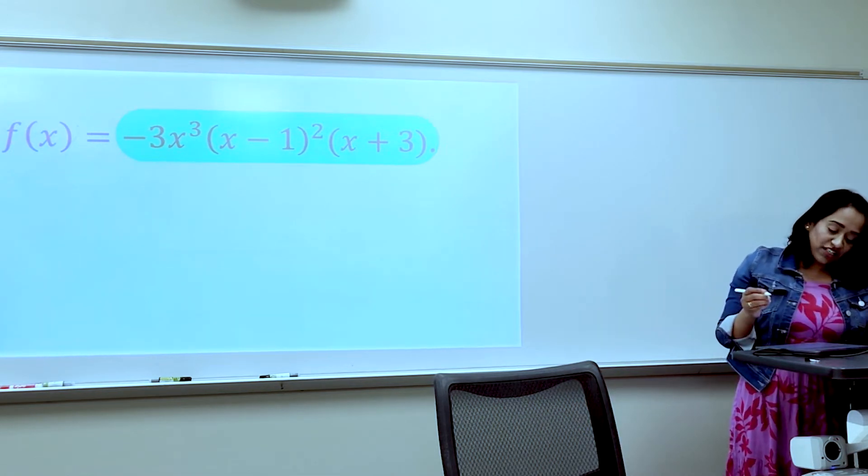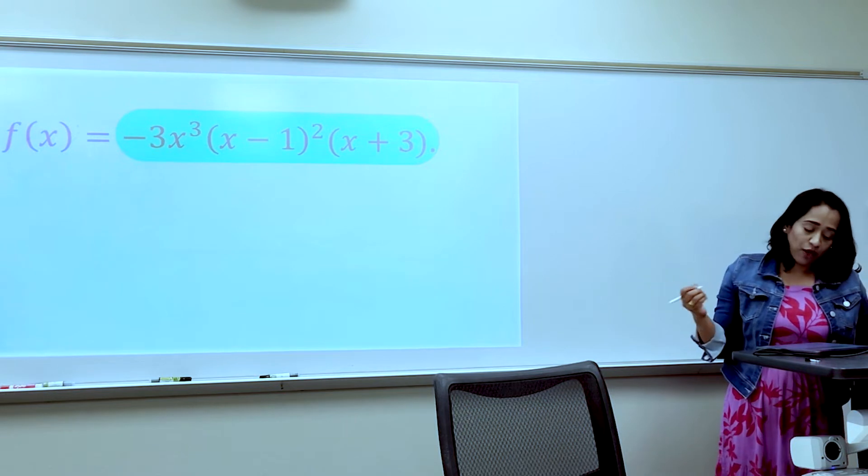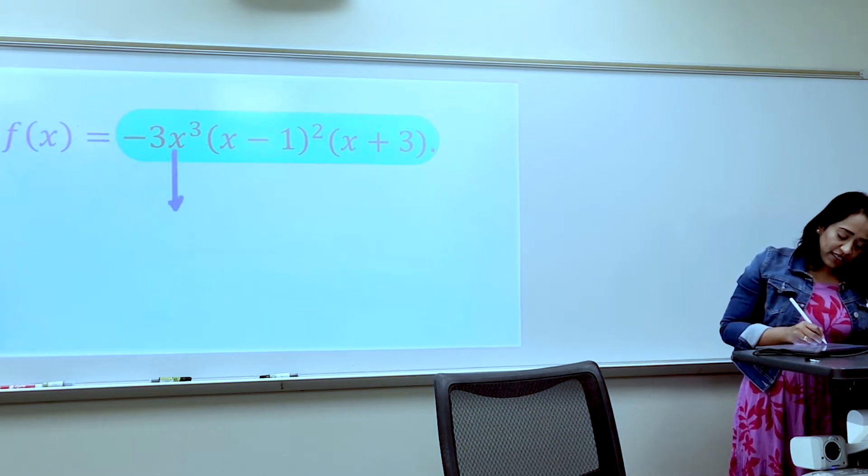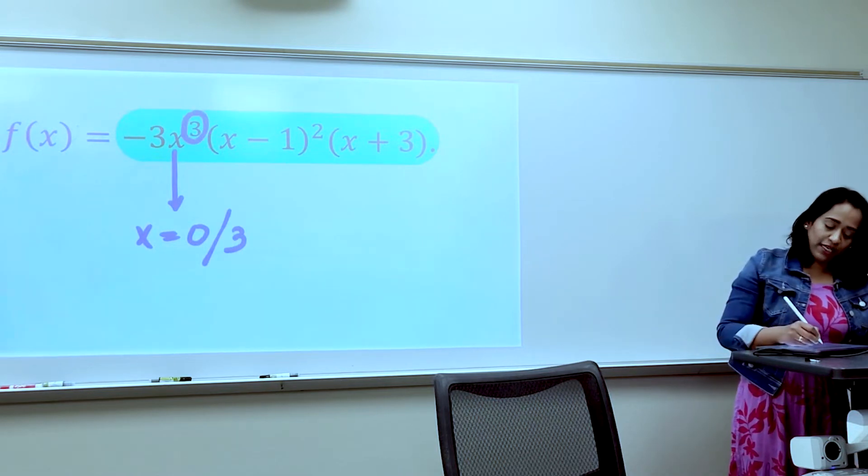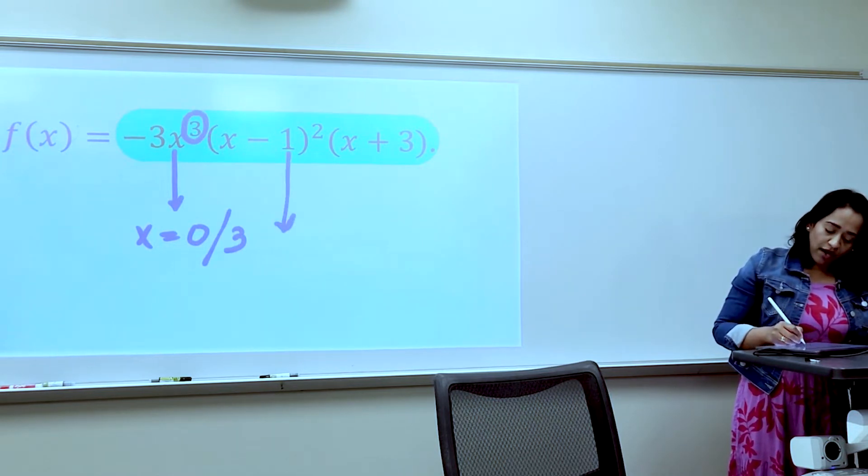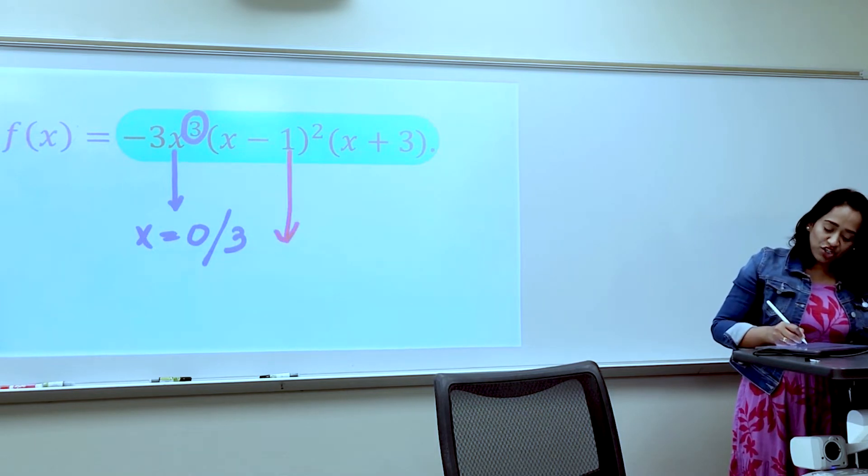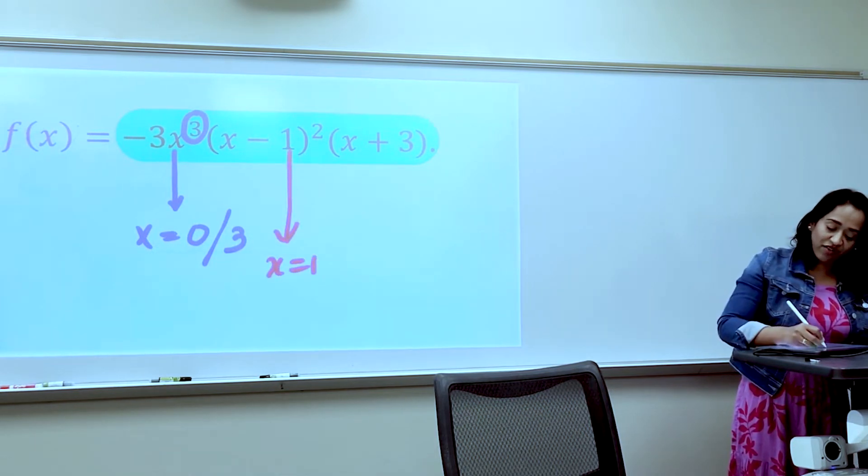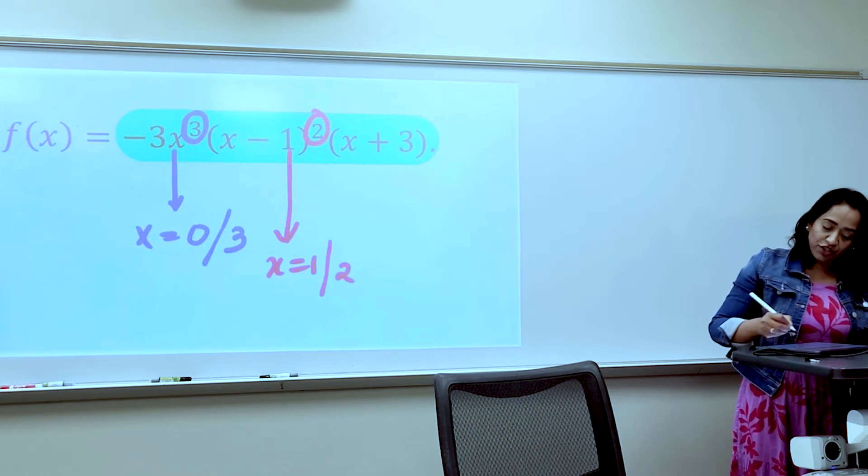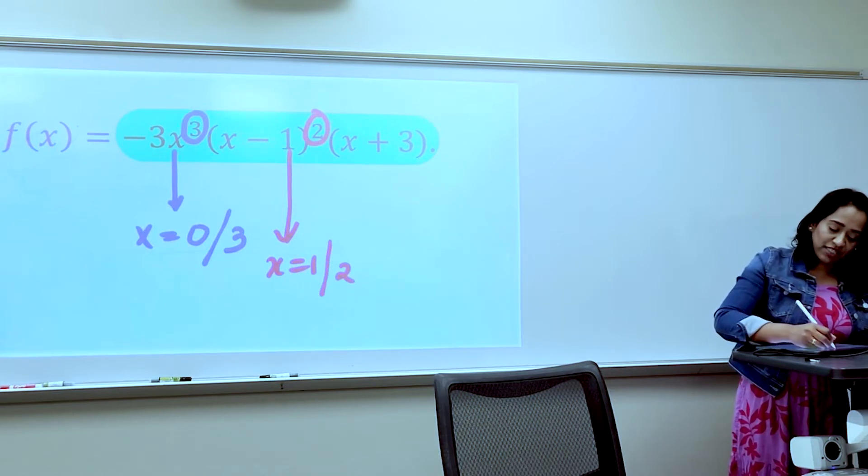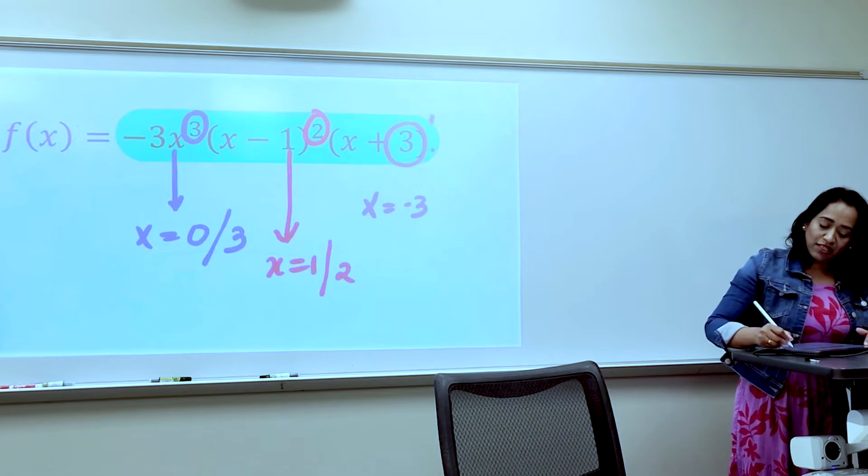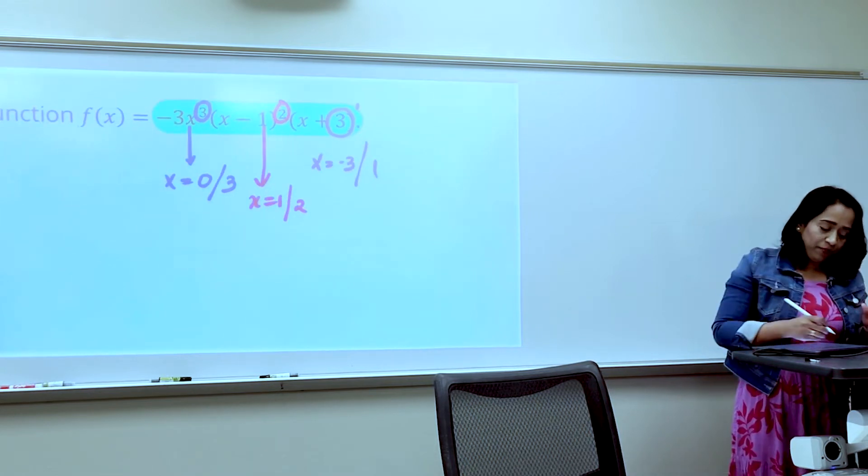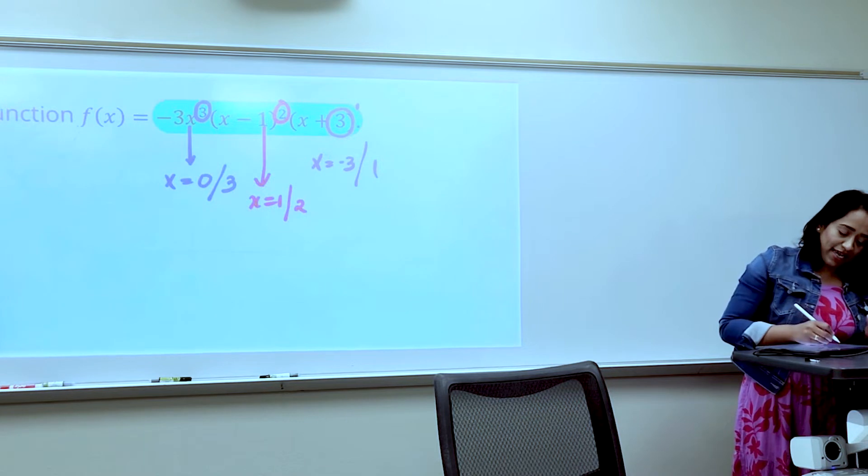I'm going to be using different kinds of pens to explain the problem. So the multiplicity of x equals 0 is 3—the power is the multiplicity. I'm going to do one more here. I want to change the color. As you can see, changing colors is very easy. The multiplicity is 2. I'm going to change it to black, or let me pick a purple color—why not? And x equals negative 3, the multiplicity is 1.